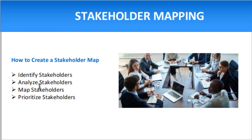The procedure to create a stakeholder map starts with identifying stakeholders. At the beginning of the project, sit with the customer and create an Excel sheet listing each stakeholder's name, role, position, and contact number. It is very important to identify all stakeholders. If you miss any stakeholder, they will be identified at a later stage, which will become a huge problem — they will come up with new requirements and a rework will be required to include those requirements.